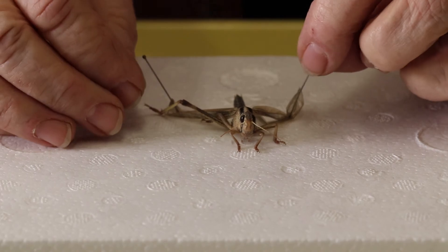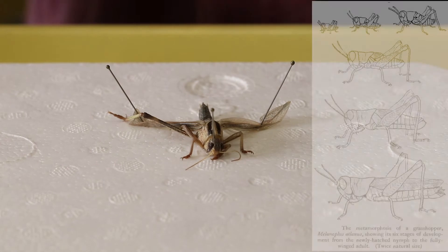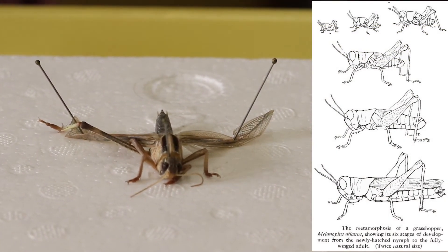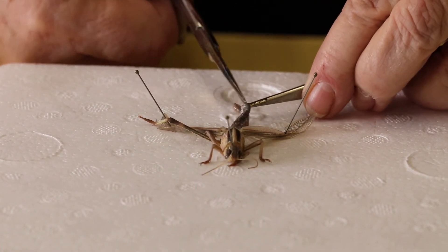The locust grasshopper Dr. Richler is using is a useful model as we can dissect grasshoppers of known age to obtain specific stages of spermatogenesis. Moreover, grasshoppers have a small number of chromosomes, thus facilitating analysis.